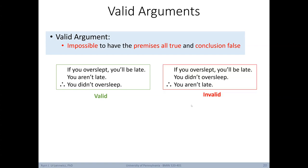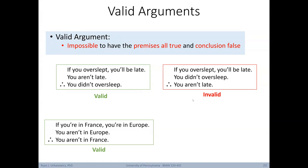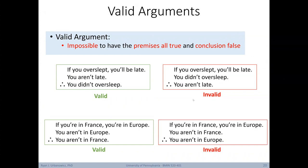Here's an example of an invalid argument: 'If you overslept, you'd be late. You didn't oversleep. Therefore, you aren't late.' This is invalid because just because you didn't oversleep doesn't mean you aren't late — maybe you missed the bus. Another valid example: 'If you're in France, you're in Europe. You aren't in Europe. Therefore, you aren't in France.' The invalid version: 'If you're in France, you're in Europe. You aren't in France. Therefore, you aren't in Europe.' This is invalid because you could be in another country in Europe.